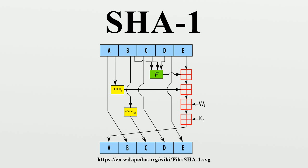Linus Torvalds has said about Git: "If you have disk corruption, if you have DRAM corruption, if you have any kind of problems at all, Git will notice them. It's not a question of if, it's a guarantee. You can have people who try to be malicious. They won't succeed. Nobody has been able to break SHA-1, but the point is SHA-1, as far as Git is concerned, isn't even a security feature. It's purely a consistency check."